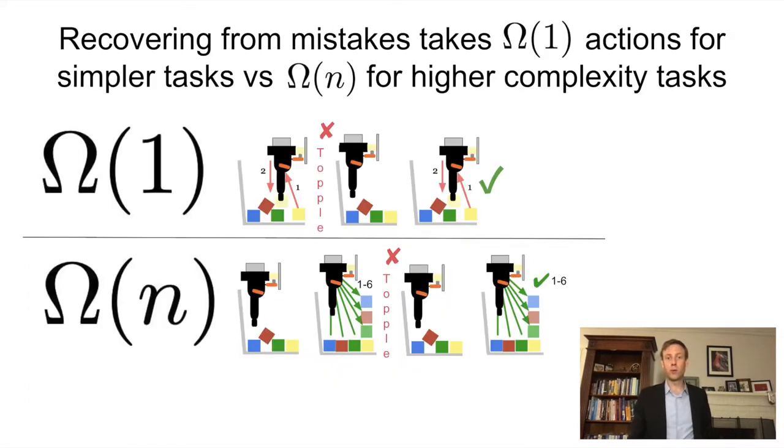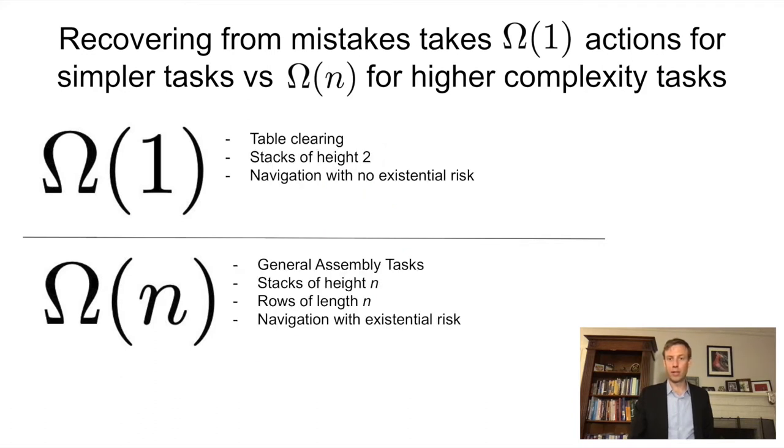So why does this sort of thing matter? Well, a lot of simple mistakes can be recovered from in Ω(1) actions, while more complex tasks can take Ω(n) actions to complete. So examples of these simpler Ω(1) tasks include table clearing, stacks that are two blocks tall, and navigating around that grid world with no existential risk. More complex tasks with Ω(n) recovery includes general assembly tasks, stacks of height n, rows of length n, and navigation with existential risk. In that last one, you basically end up having to start over at the beginning with a replacement robot, which is obviously extremely expensive.